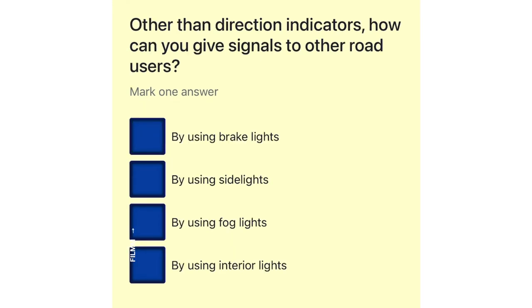Other than direction indicators, how can you give signals to other road users? By using brake lights. By using side lights. By using fog lights. By using interior lights.